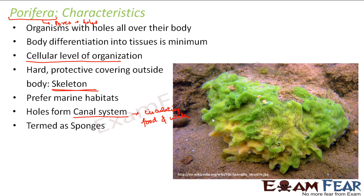Porifera are also termed sponges because of their appearance and the presence of holes all over their bodies. The word 'sponge' refers to a soft material that can easily absorb a lot of water because it has many pores — similar to sponge towels or sponge cakes, which also have lots of pores and absorb water. That is why this class, Porifera, is also termed sponges.